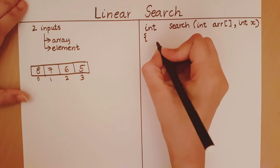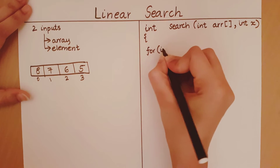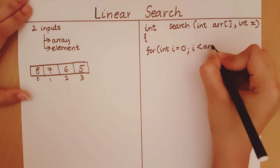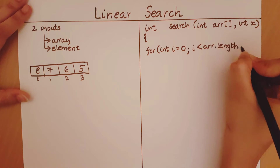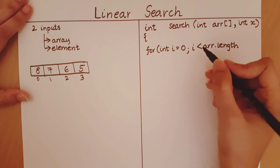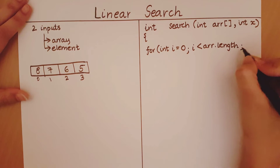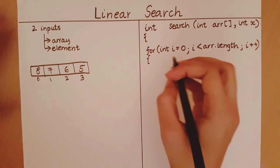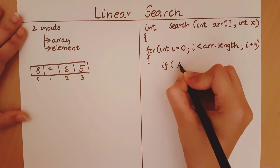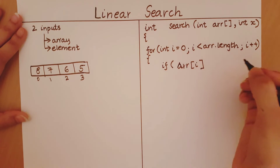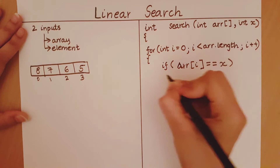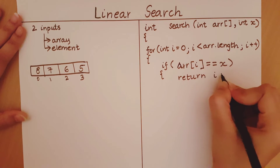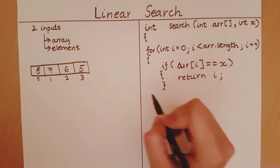So let's write that code. i starts at zero, i goes up to the last index — so less than arr.length — and each time it increments by one. At each value of i we check if arr of i is equal to x. If this is true, we return the value of i. If not, we continue the loop.